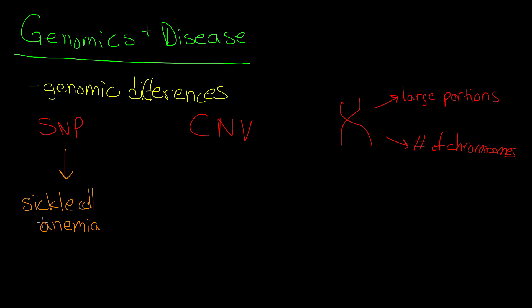We're going to get more into sickle cell anemia later. An example of the copy number variant would be autism, which can be caused by increased or decreased copy numbers of a 600-kilobase portion of chromosome 16. Autism can be caused by having multiple copies or not enough copies of that particular string of bases.